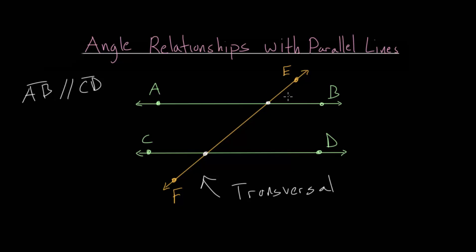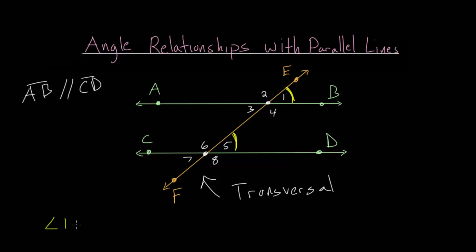I'm going to label these angles. We can call this angle 1, 2, 3, and 4, and over here 5, 6, 7, and 8. So when a transversal crosses two parallel lines there are eight angles created. The main thing to notice is that angle 5 is the same as angle 1. We call these corresponding angles, and they are equal.